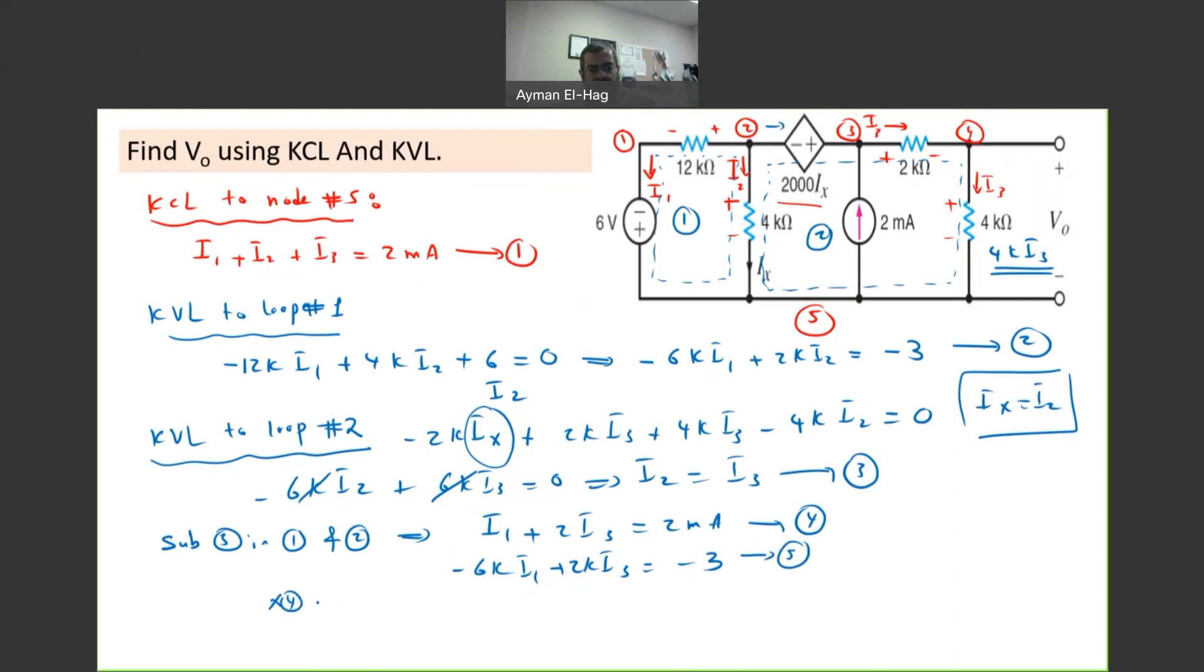I will multiply equation 4 with 1,000 so we can bring everything to the same level. This becomes I1 plus 2K I3 equal to 2, and this is equation 6. Now I want to get rid of I1, so I will multiply this equation by 6. Multiply equation 6 by 6, so we'll have 6K I1 plus 12K I3 equal to 12, and this is equation number 7. Now if we go for 5 and 7, if we add them, this will cancel.